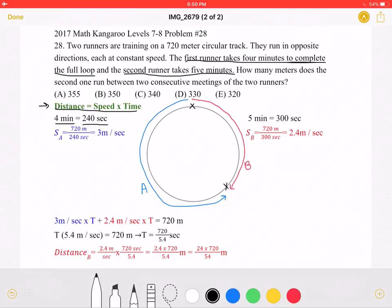Using this formula, we know that speed is equal to distance over time. So the speed of runner A is equal to the distance, 720 meters, over time, which is 240 seconds, which simplifies to a speed of 3 meters per second.